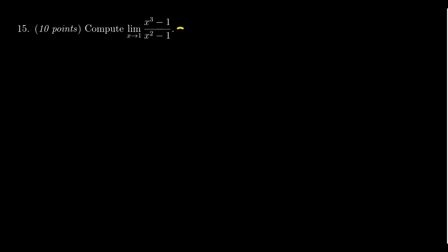The tempting thing to do is just to plug in x equals 1 and you get 1 cubed minus 1 over 1 squared minus 1. That's equal to 1 minus 1 over 1 minus 1, which gives 0 over 0. That's an indeterminate form, so that's not going to give us the limit. That just tells us we've got to do something else.